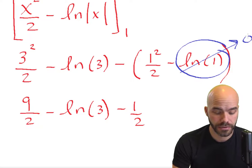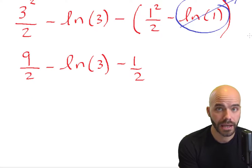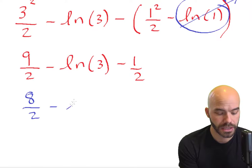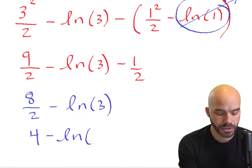Now we just combine our common terms. 9 halves minus 1 half is 8 halves minus natural log 3. And then of course 8 halves is 4. 4 minus natural log 3 will be the exact answer to this integral.